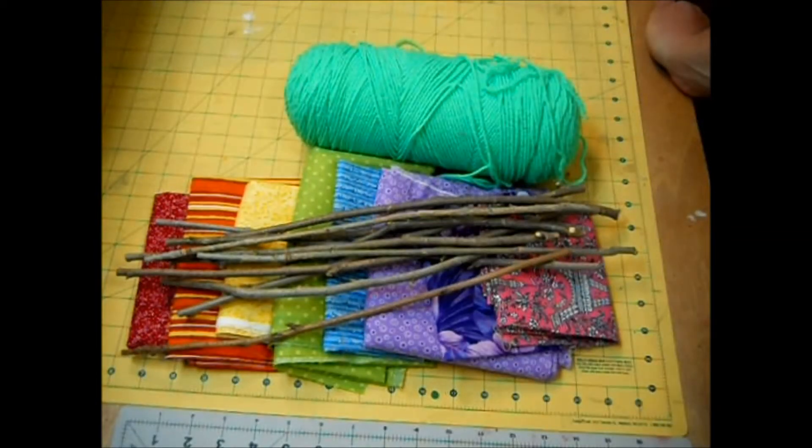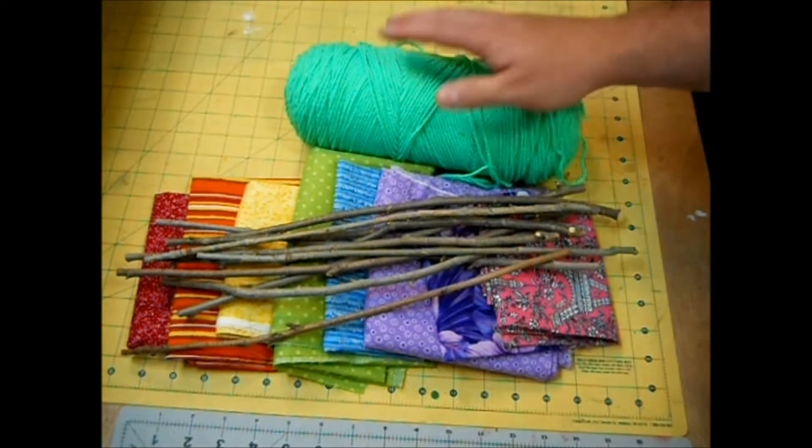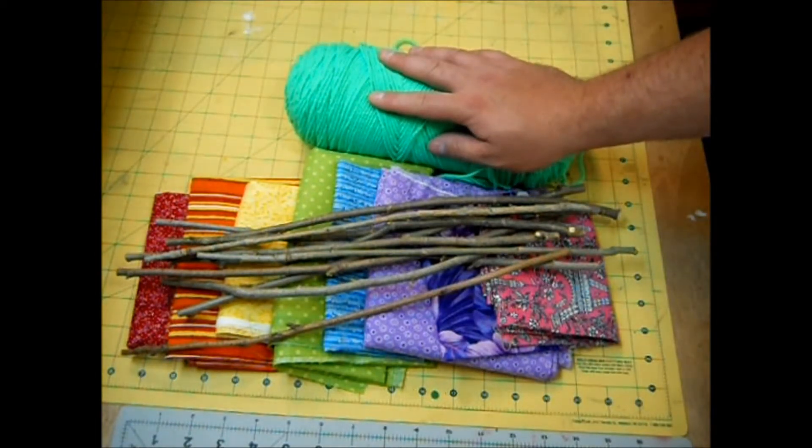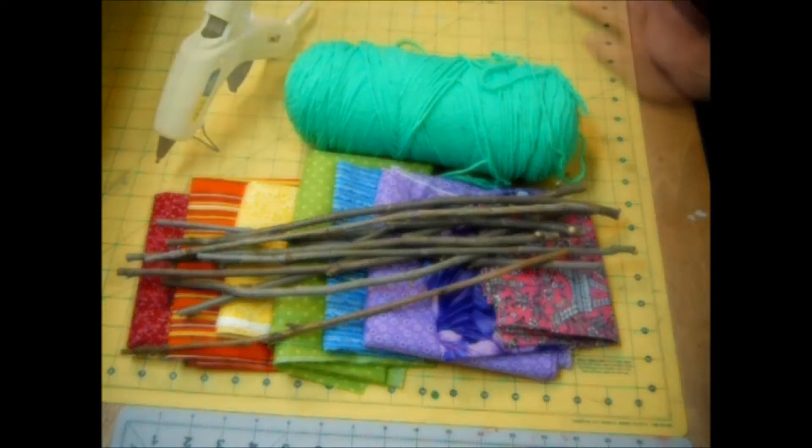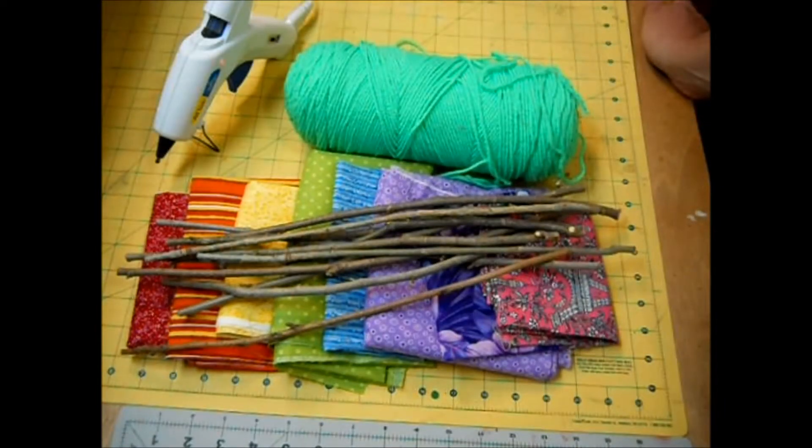You're going to need some sort of yarn or string or even thin rope. Today I'm just going to use green here but you could match your yarn or rope to your fabric. You're also going to need your hot glue gun with glue sticks and also your sewing machine if you have one. We'll be using a basting stitch today or you can just do this with a needle and thread also.